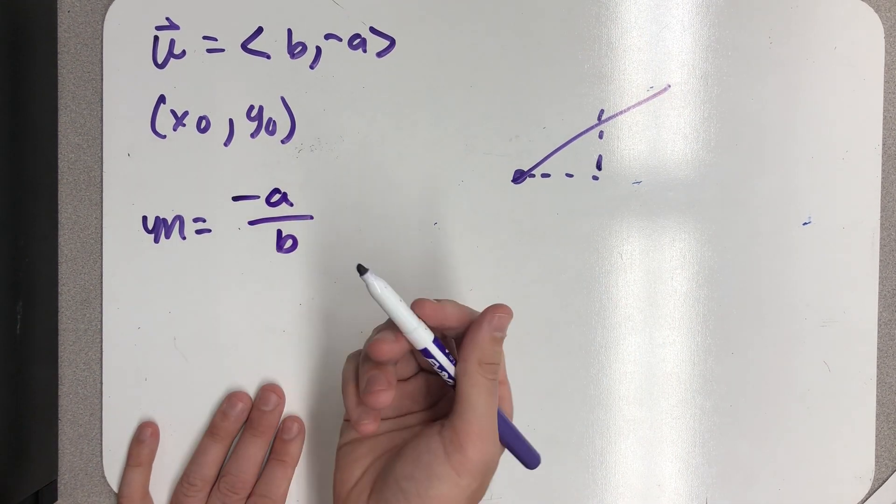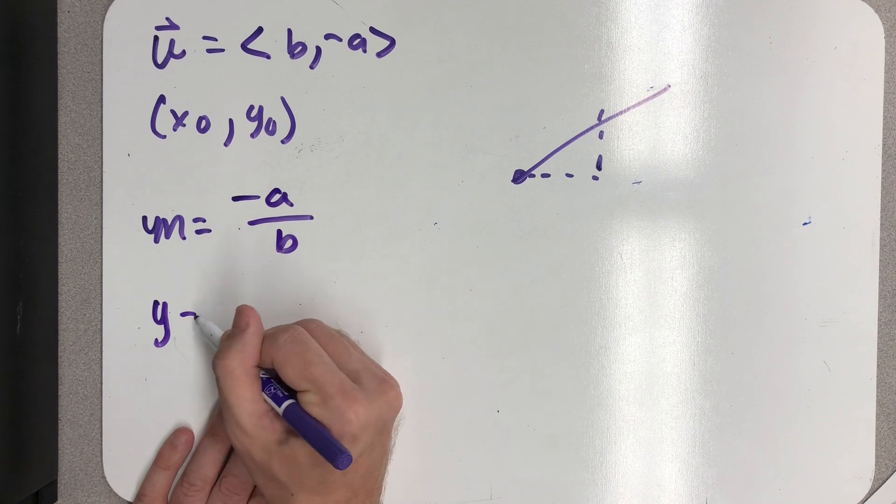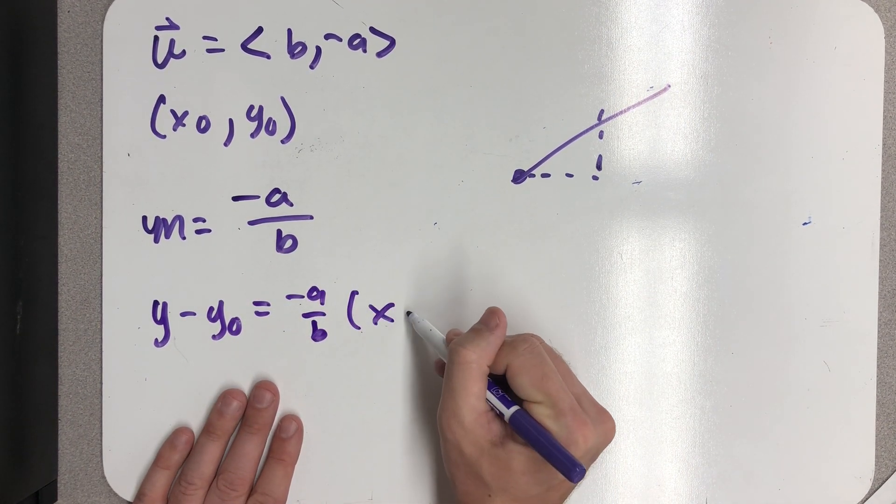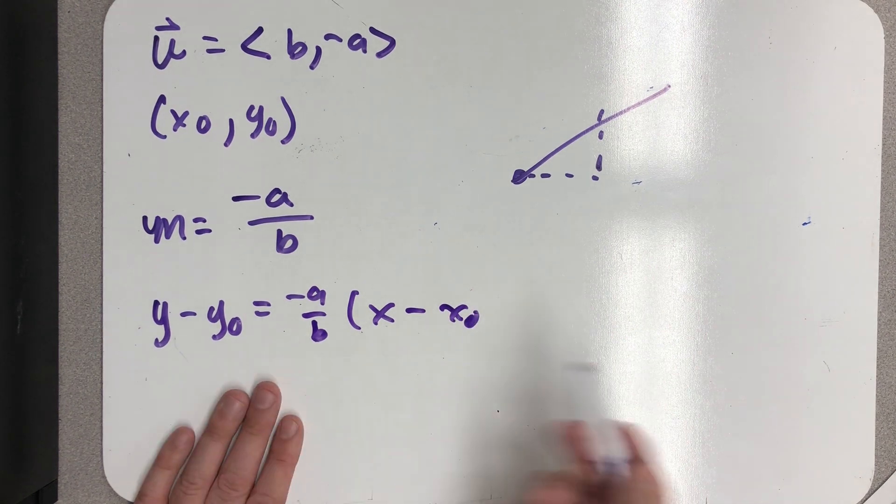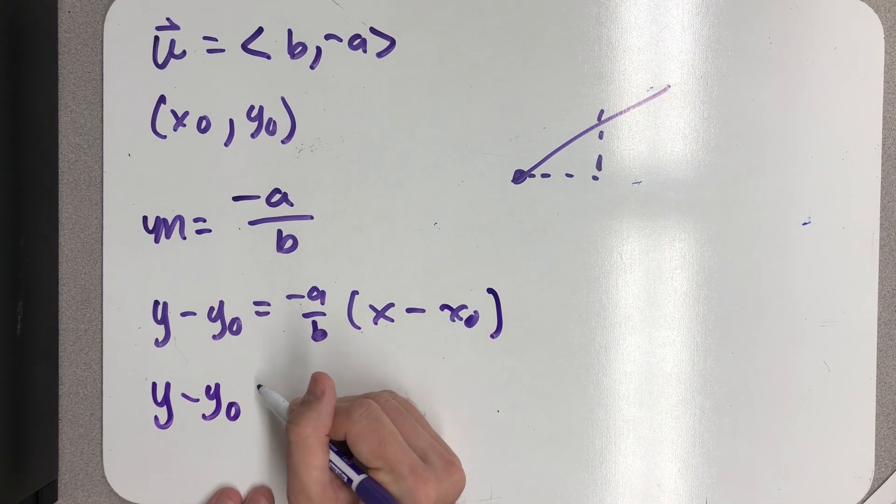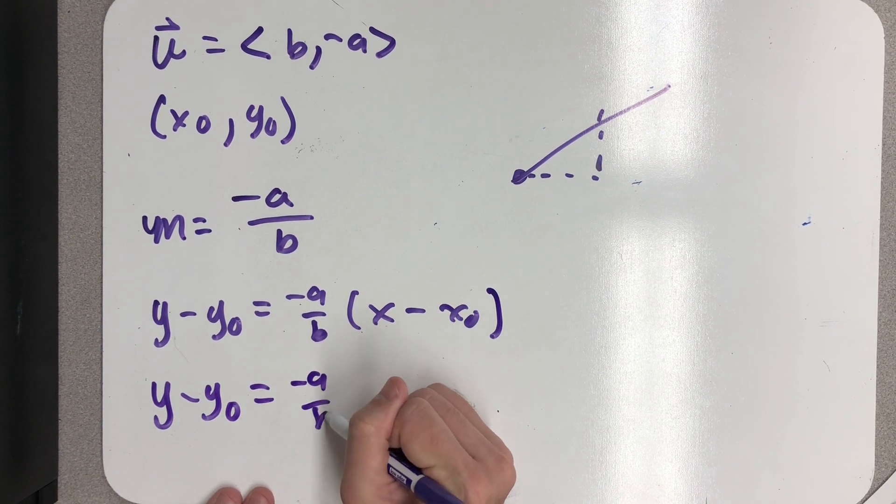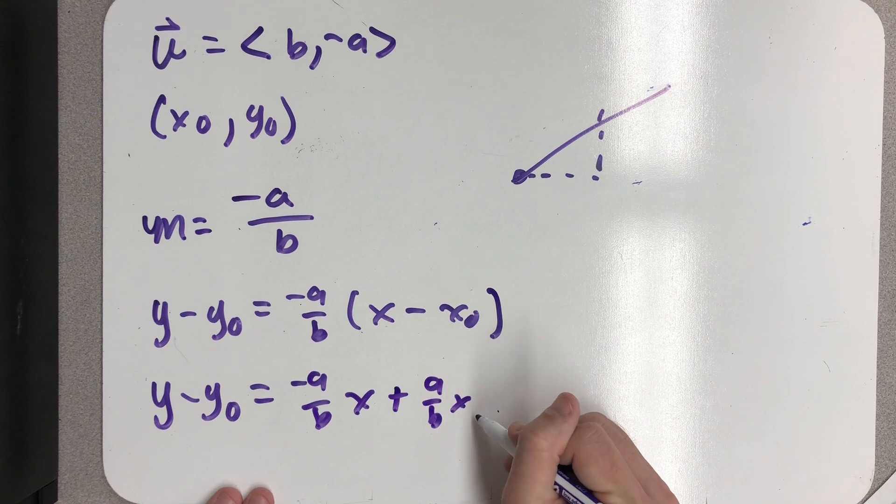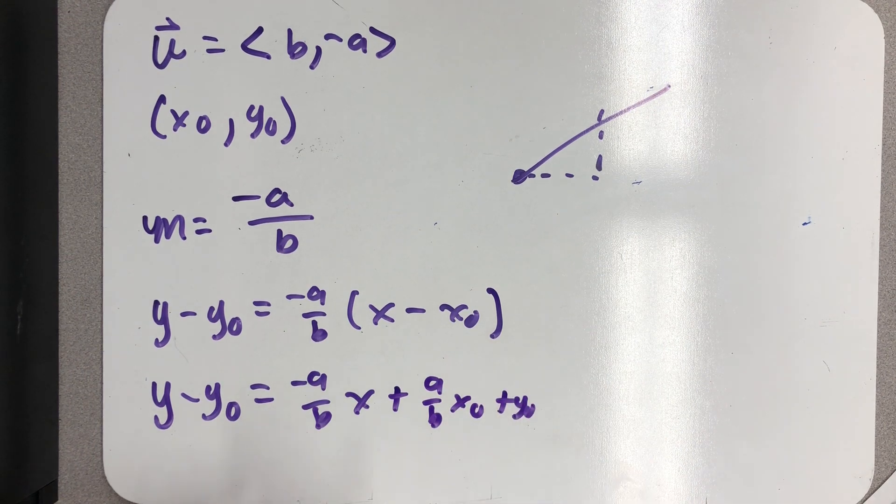So, point slope form, I would see this. And I could distribute. I guess I did say I wanted it in slope-intercept form. I really probably wouldn't care too much to write down this collection of symbols, but that's what my line would look like in slope-intercept form.